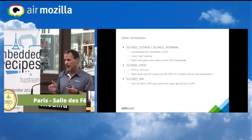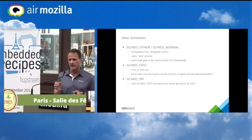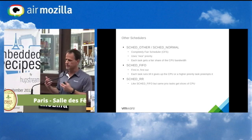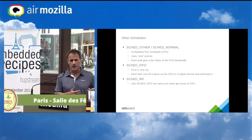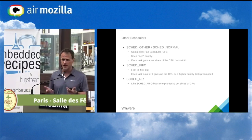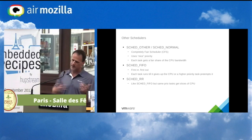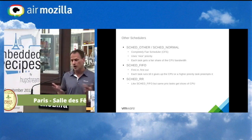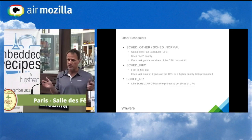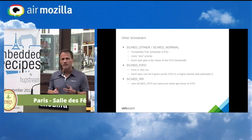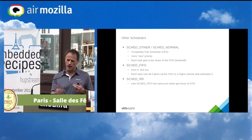You can change how much one process gets compared to another with a nice value. A nice value is a command where you can make an operation either more nice or less nice. If you make it more nice, it gets less priority. If it's less nice, it gets more priority — and it's not nice to other tasks because it hogs the CPU. But it's not very predictable in exactly how much time things get.